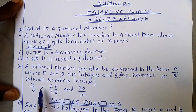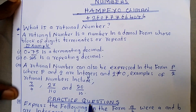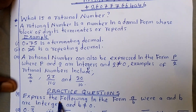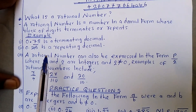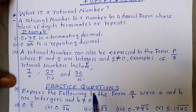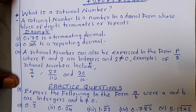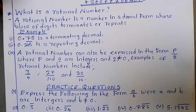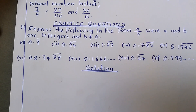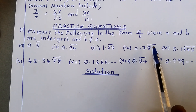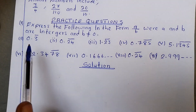Examples of rational numbers include 3 over 4, 27 over 110, and 20 over 10. You will be asked questions where they ask you to express certain decimals in the form A over B. This is where a lot of people have challenges, but I will make everything easy for you. So the first question is: express the following in the form A over B, where A and B are integers and B must not equal 0.